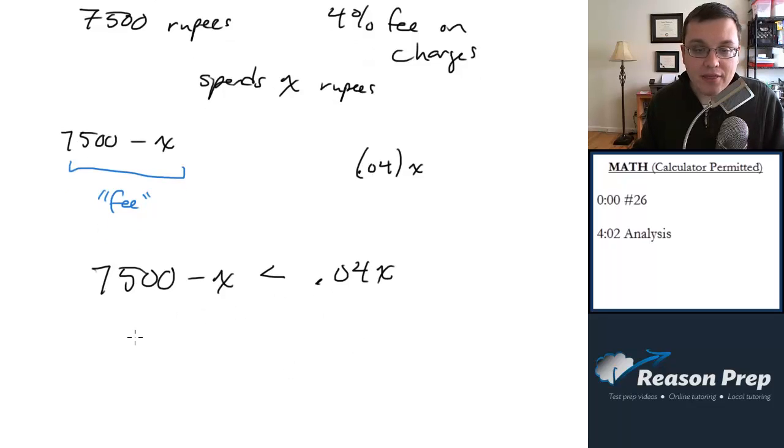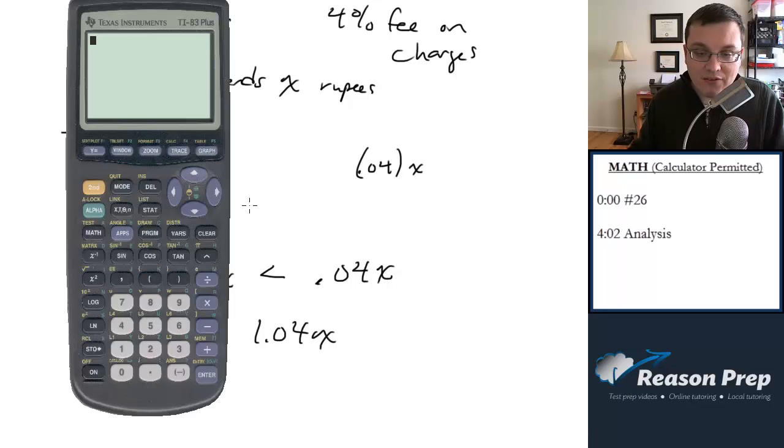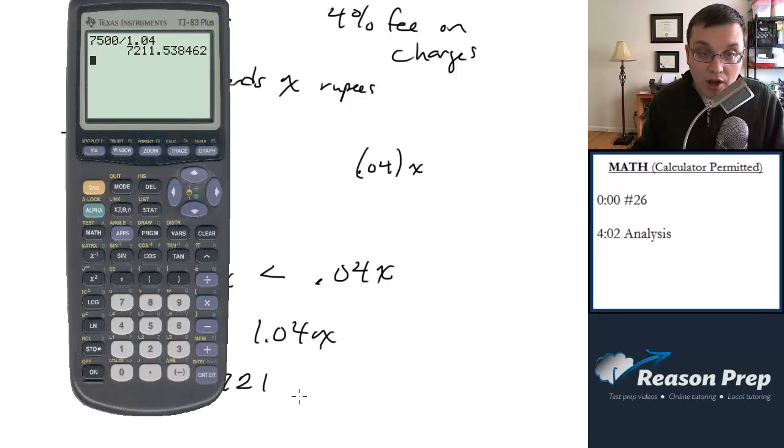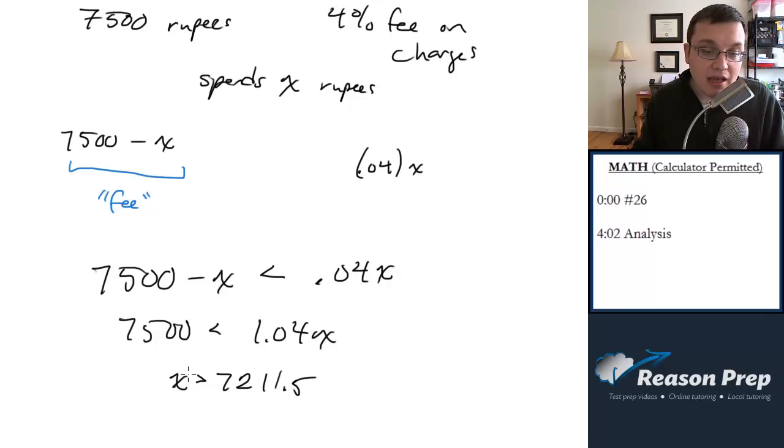And now we've got to go ahead and just do a little bit of math. So 7,500 minus X is less than 0.04X, adding 1X to both sides. So we're going to divide 7,500 by 1.04. Let me get 7,211. X has got to be greater than 7,211.5. Now, careful about the rounding. When X is bigger than this, we are going to have a situation where your fee here is going to be less than the fee here. So we need to round up in this case. So we're going to get a final answer of 7,212. This is the minimum number of rupees she has to spend in order to make this a better deal.